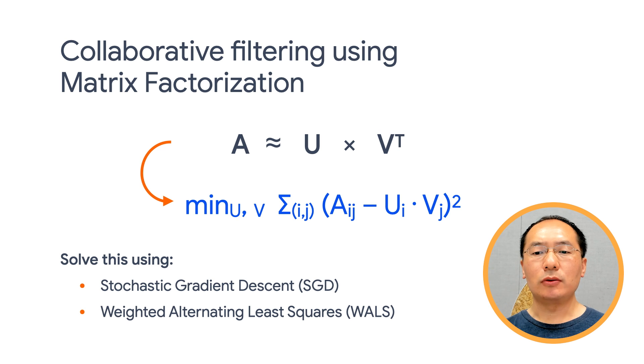We won't go into the mathematical details, but I should point out that SGD and WALS each have their own advantages and disadvantages. For example, WALS usually converges faster than SGD, while SGD is more flexible and can handle other loss functions.